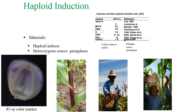Coming to tropical inducers: Stock 6, WS14, KEMS, RWS, PK6 and UH400. KEMS, RWS and UH14 are commonly used.